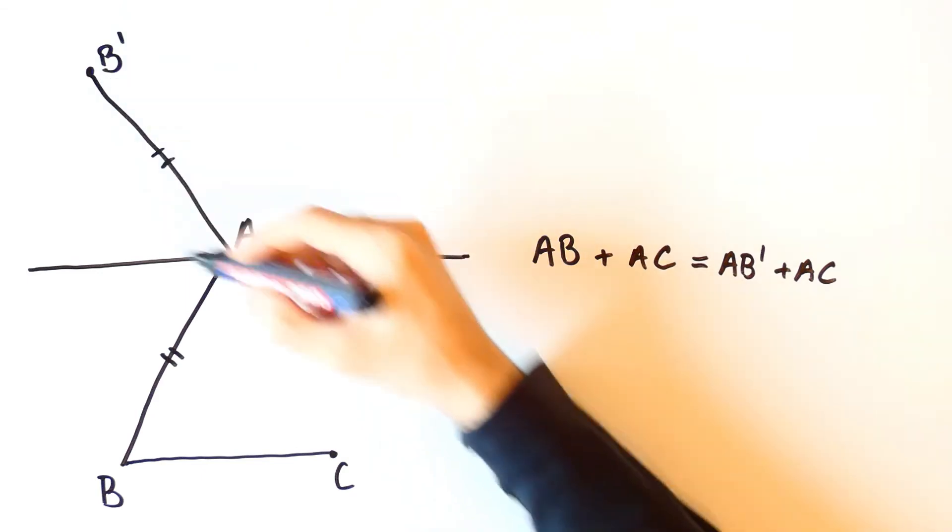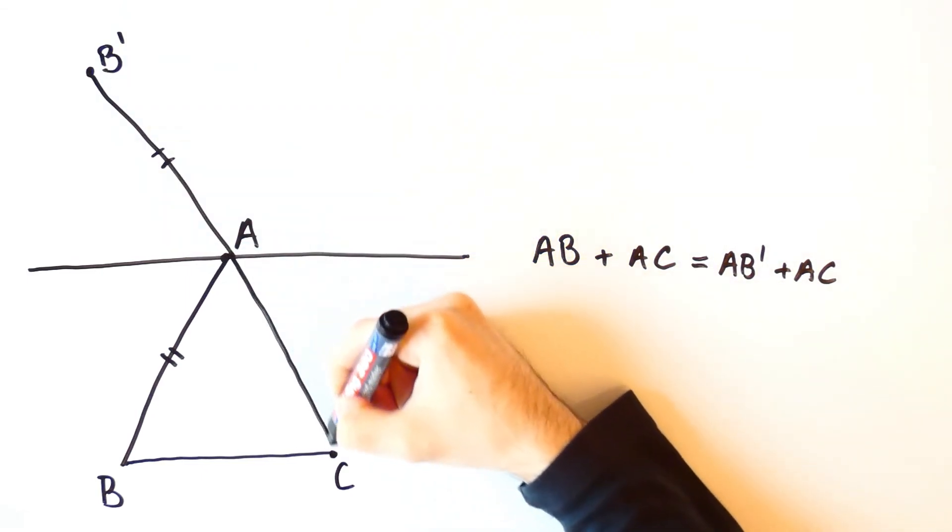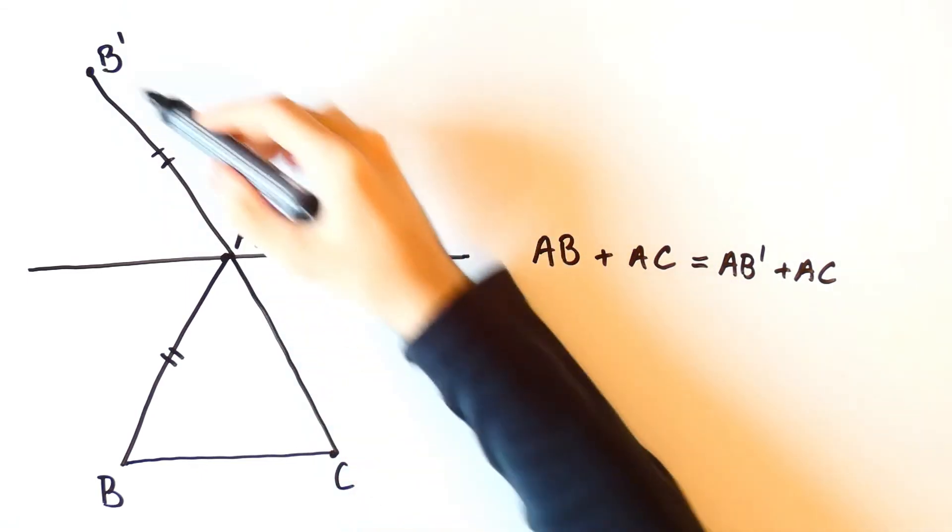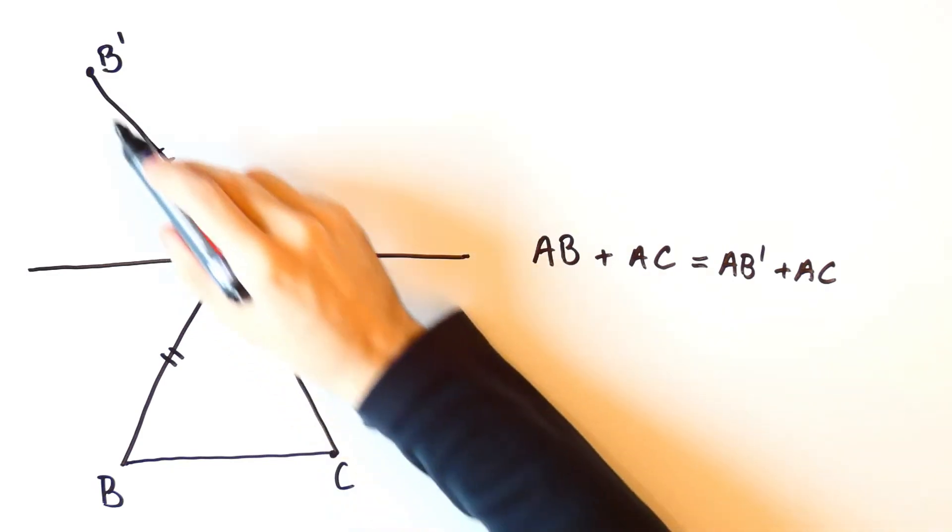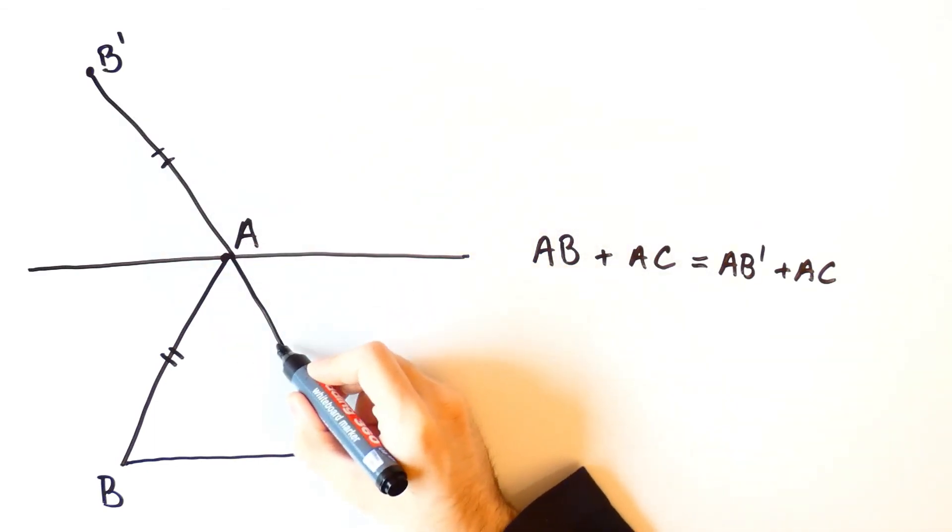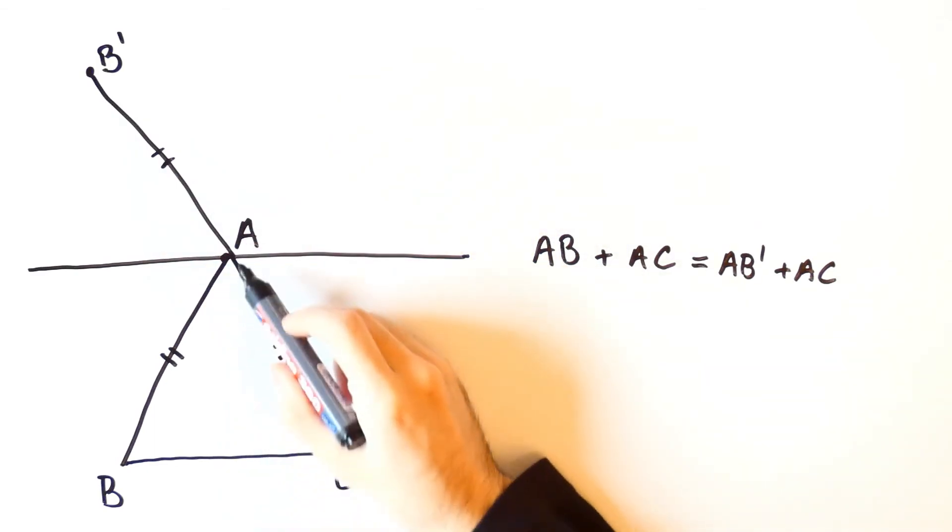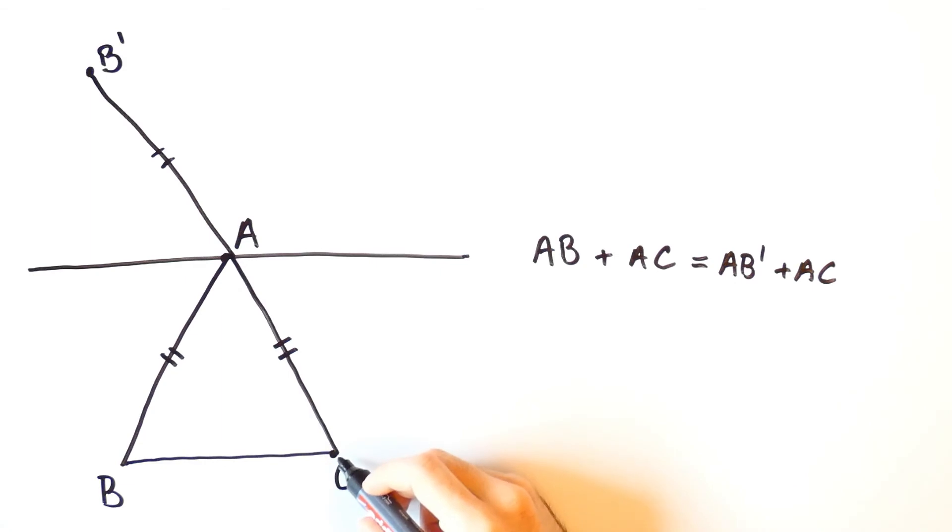And AB prime plus AC will be the smallest possible when B prime, A and C are on the same line. And in that case AB prime will also be equal to AC, in which case the triangle ABC is an isosceles triangle.